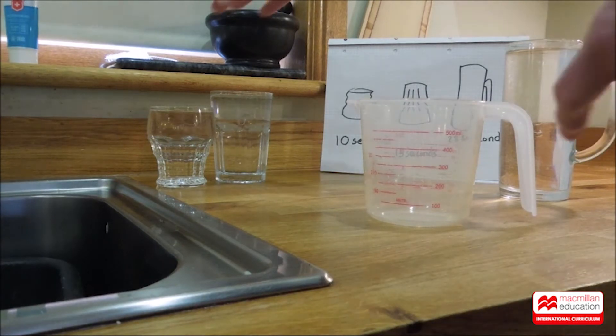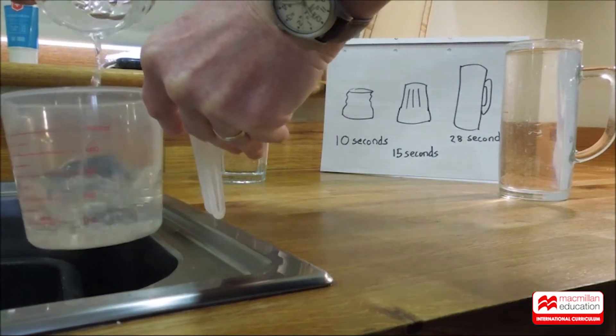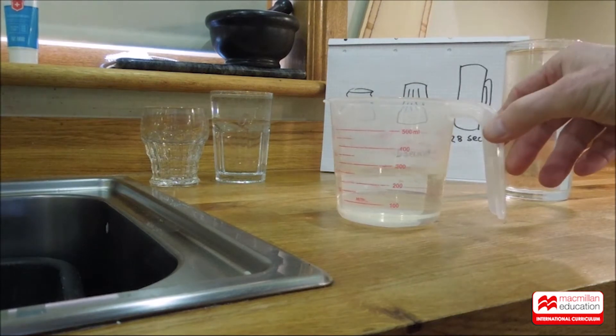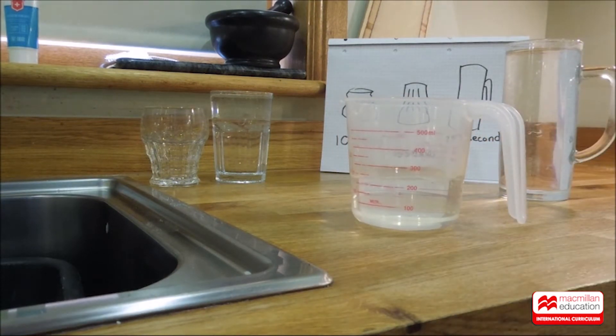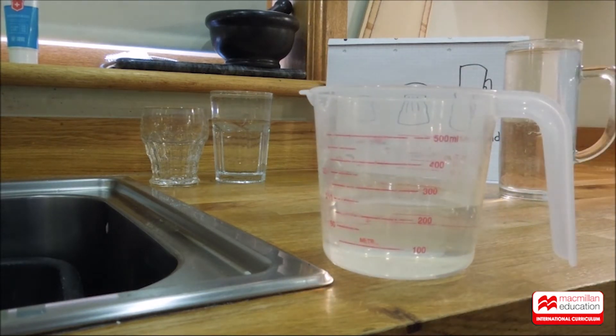Let's start with the smallest one. Can you see the volume? Between 200 and 300 milliliters. I'd say that's close to 250 milliliters. Let's make a note of that.